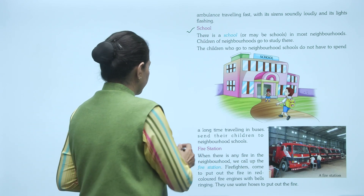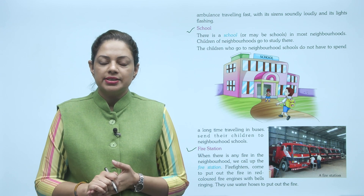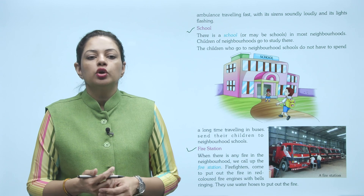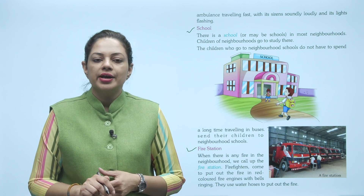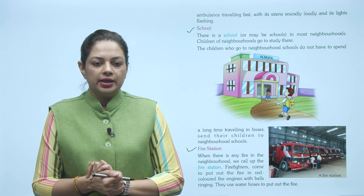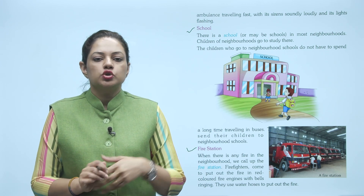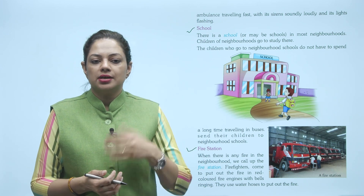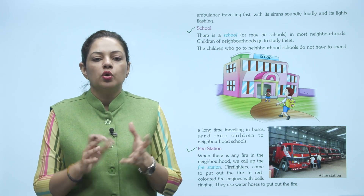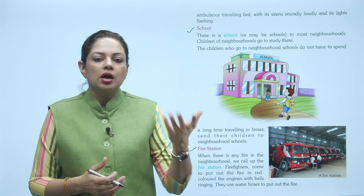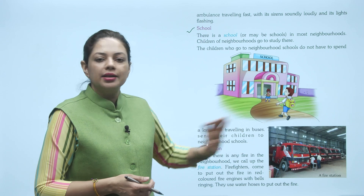Next is fire station. When there is any fire in the neighborhood, we call up the fire station. Jab bhi hamare neighborhood mein aag lag jaati hai, toh hum fire station mein call karte hain. Firefighters come to put out the fire in red colored fire engines with bells ringing. Jo aag bujhaane wale log hote hain unhe firefighters bolte hain — woh ek red color ke fire engine mein aate hain, bahut tez siren ke saath. They use water hoses to put out the fire — bade bade water hose, bade bade paani ke pipe hote hain jo aag bujhaane mein help karte hain. Picture mein aap dekho ek fire station hai jisme kitne saare fire brigades khadi hain — red color ke hote hain ye bhi.